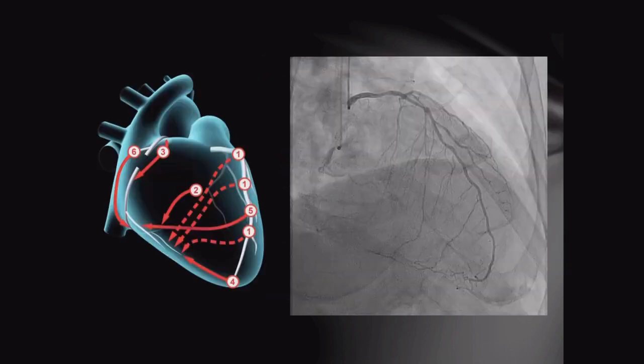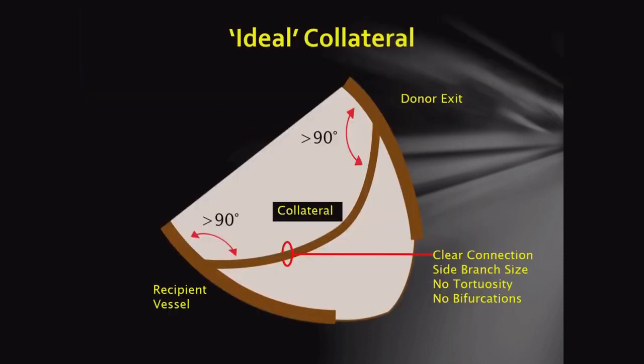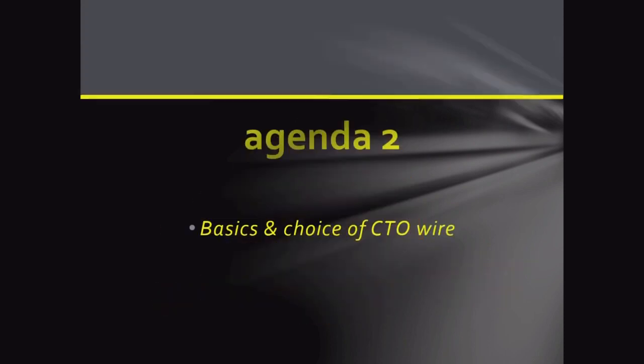When choosing collaterals — for example, in RCA CTO — you may have collateral options 1, 2, and 3. If you fail one, go to the second, then the third. The ideal collateral will have a very clear connection, no tortuosity, no bifurcation, and the angle between the donor and recipient exit should be more than 90 degrees.